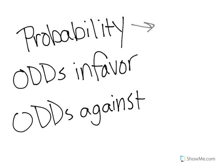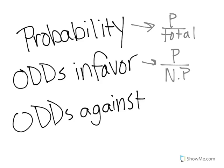To sum up: for probability, whatever color you're talking about goes on the top and the total always goes on the bottom. For odds in favor, the color goes on top and not that color on the bottom. For odds against, the 'not' number goes on the top and the color goes on the bottom. Thanks for watching and I hope this helps!